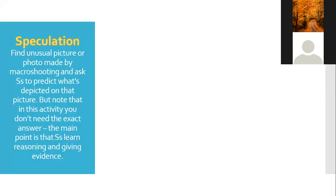To shorten the theoretical part, let's have a short practice. Today, to demonstrate how to teach critical thinking in English classes, I have chosen four or five activities which are, in my opinion, the most interesting — ones I have personally practiced in my classes and which are really beloved by my students. I want to start with this amazing activity for critical thinking, which is called speculation.